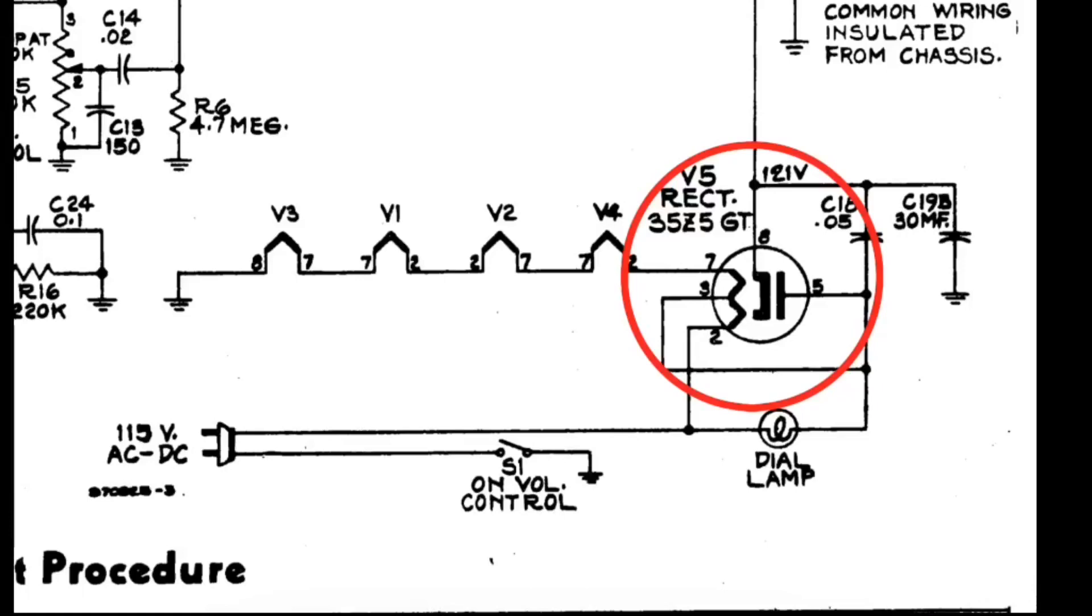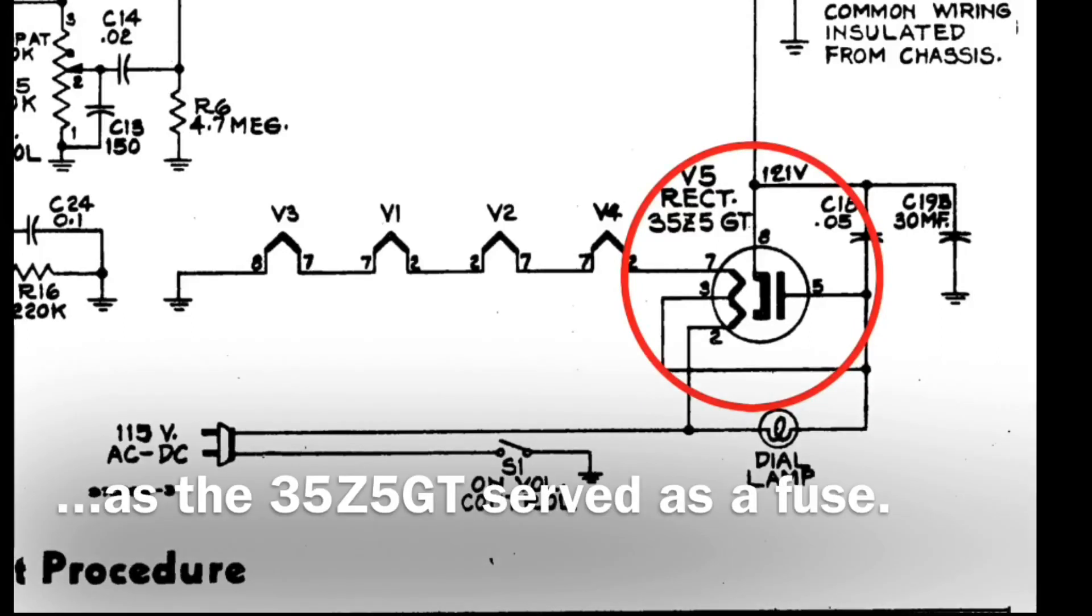Some of you guys that have been doing radio repairs for a long time may have read the article. The 35Z5GT tube, when jarred, can create noise picked up by the loop antenna in our particular design. When it's picked up by the loop antenna, it's amplified and makes its way all the way through to the loudspeaker. At one time, they were actually considering using tube shields around the rectifier tube to help mitigate the issue. That was short-lived, and they elected to just ignore that due to the short life of the rectifier tube itself.